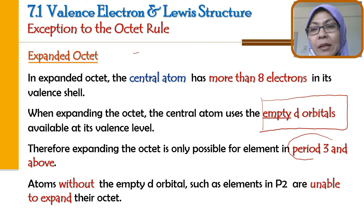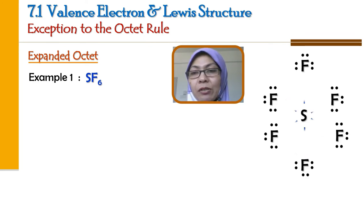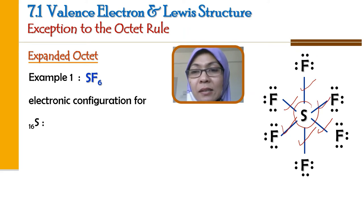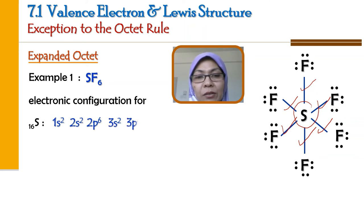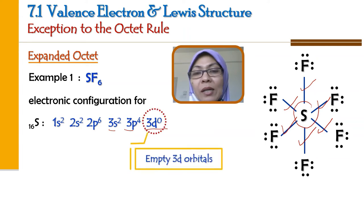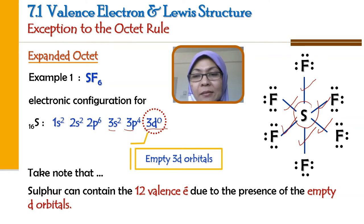Contoh pertama: SF6. Cuba tengok center atom S — center atom S ada berapa elektron? 2, 4, 6, 8, 10, 12 elektron di sekelilingnya. Itu memanglah sudah melebih-lebih daripada octet. Perhatikan bahawa S — ini dia punya electronic configuration: sulfur (16): 1s², 2s², 2p⁶, 3s², 3p⁴. Dan dia ada 3d yang kosong, sebab dia sudah ada orbital shell ketiga. D itu belum diisi lagi, jadi orbital d yang kosong ini membolehkan sulfur untuk expand octet dia. Sulfur mempunyai 12 elektron di sekelilingnya, dan bukannya 8 — sudah expand. Itu maksudnya expanded octet.